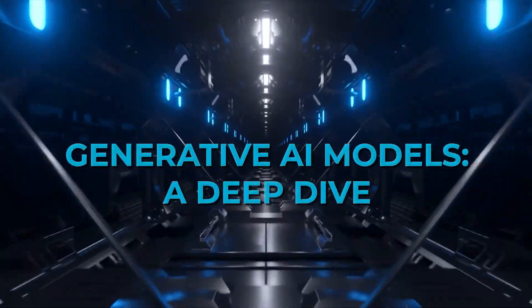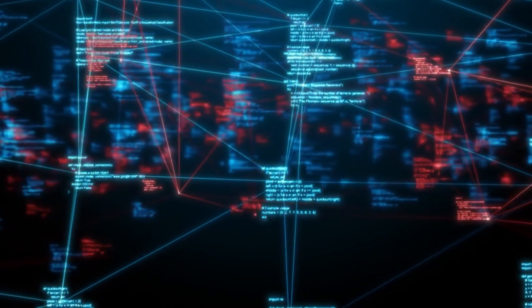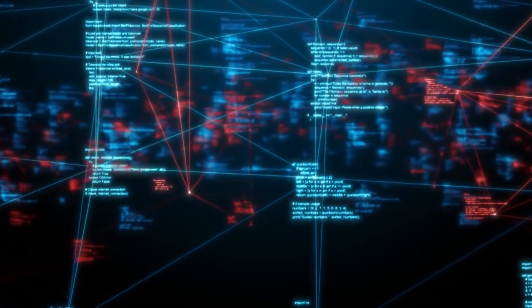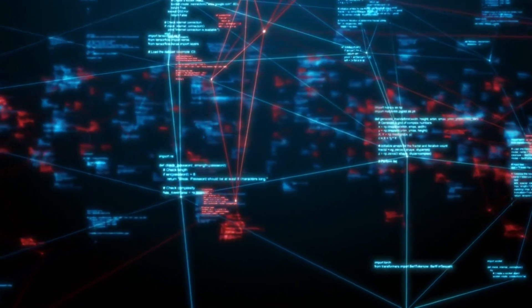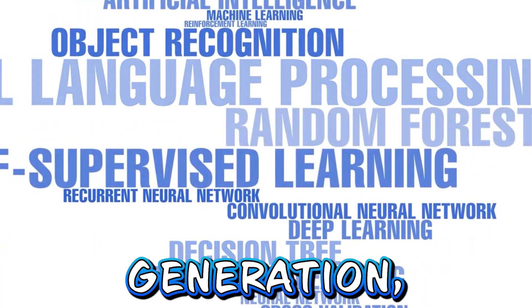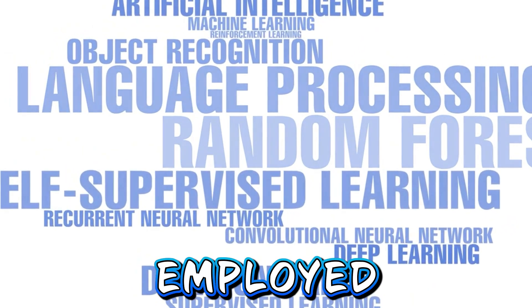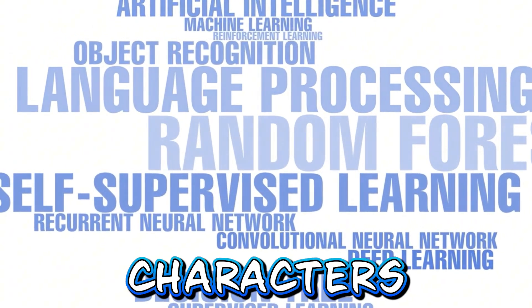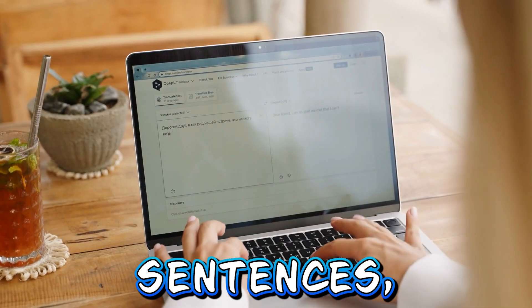Generative AI Models — A Deep Dive: At the core of Generative AI are sophisticated models that blend multiple AI algorithms to understand and process content. For instance, in text generation, natural language processing techniques are employed to convert raw characters into structured elements like sentences,